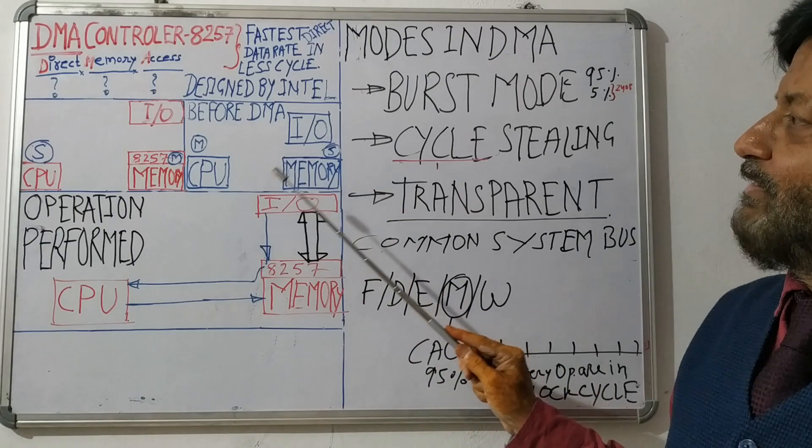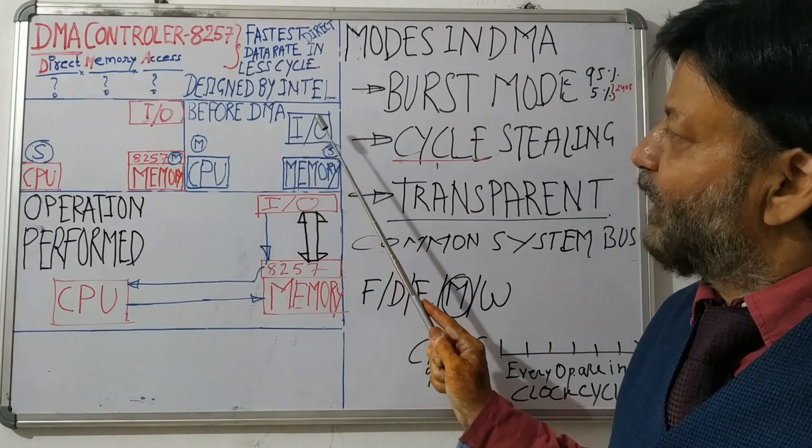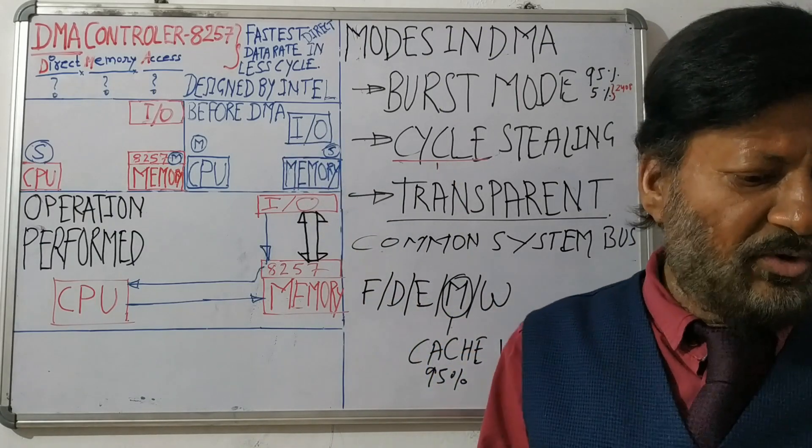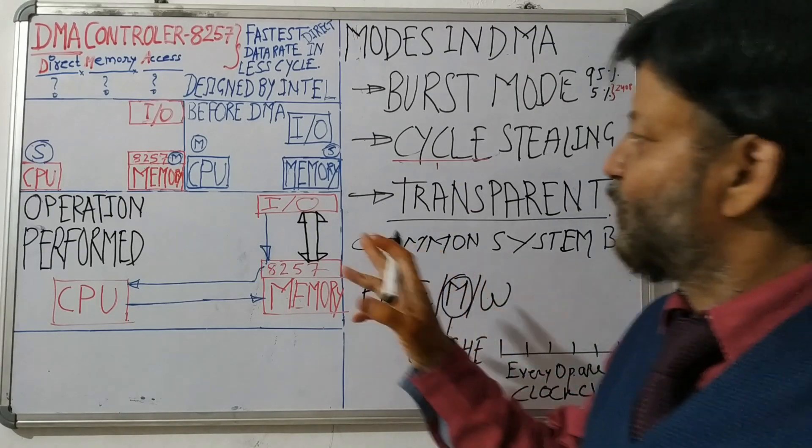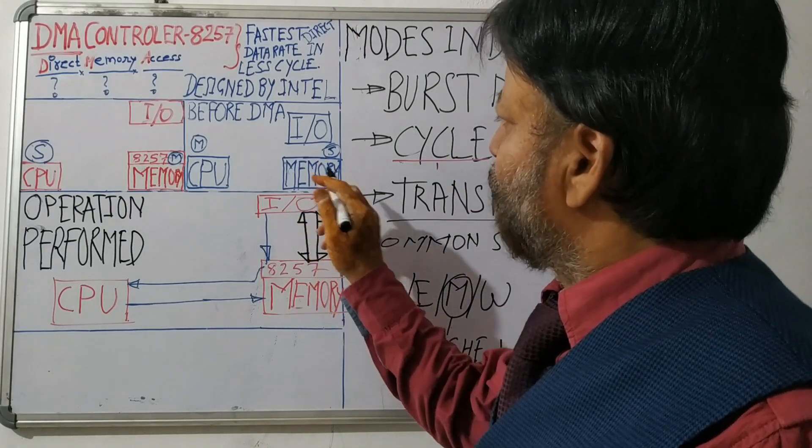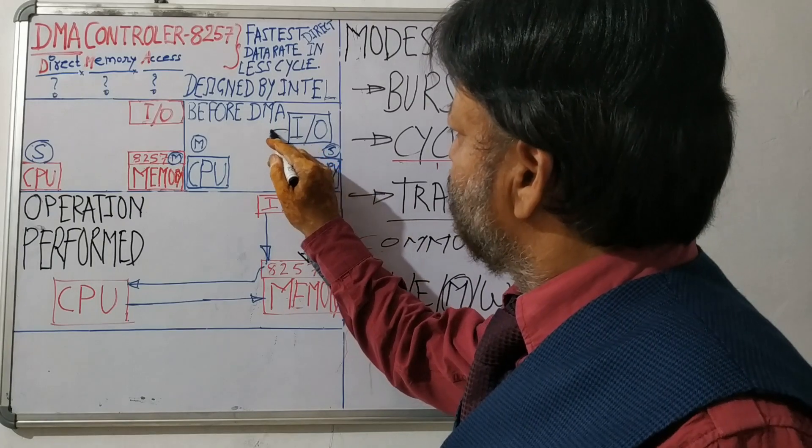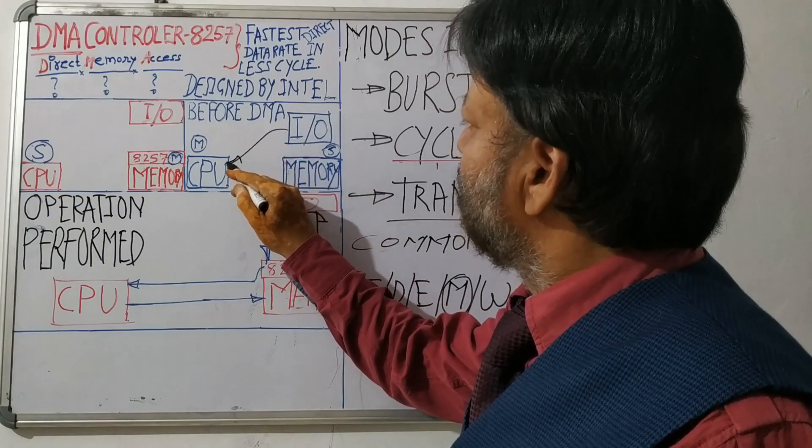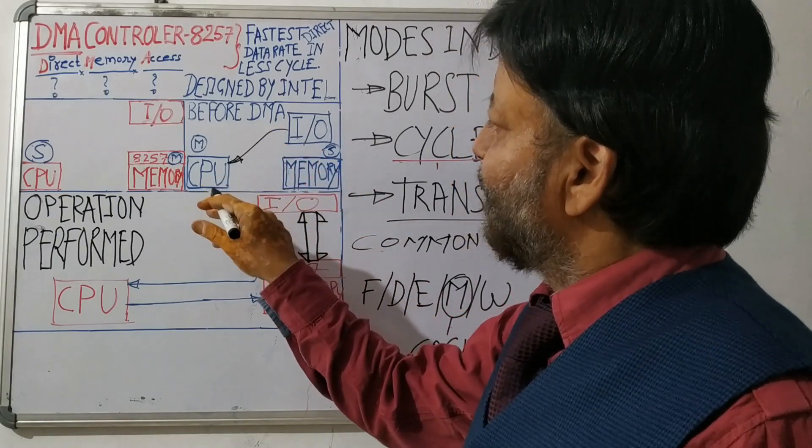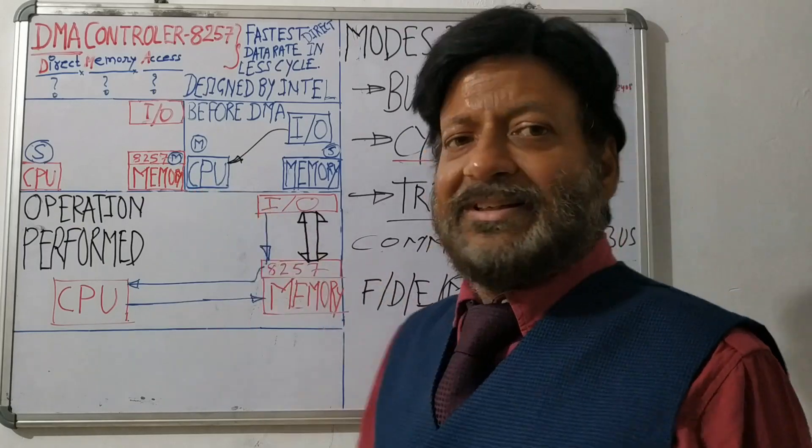So the scenario is whenever IO wants to write some data to memory, how it happens. When IO wants to write some data on memory, IO contacts the CPU. What CPU does: CPU is equipped with registers.